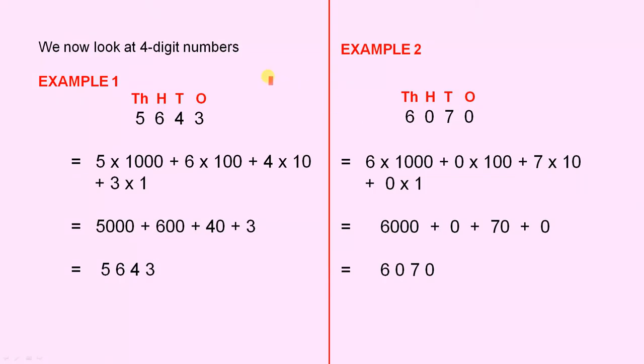We now look at 4 digit numbers. So with 4 digit numbers we have a ones column, a tens column, a hundreds column, and a thousands column. So 5, 6, 4, 3 will be 5 times 1000, plus 6 times 100, plus 4 times 10, plus 3 times 1.